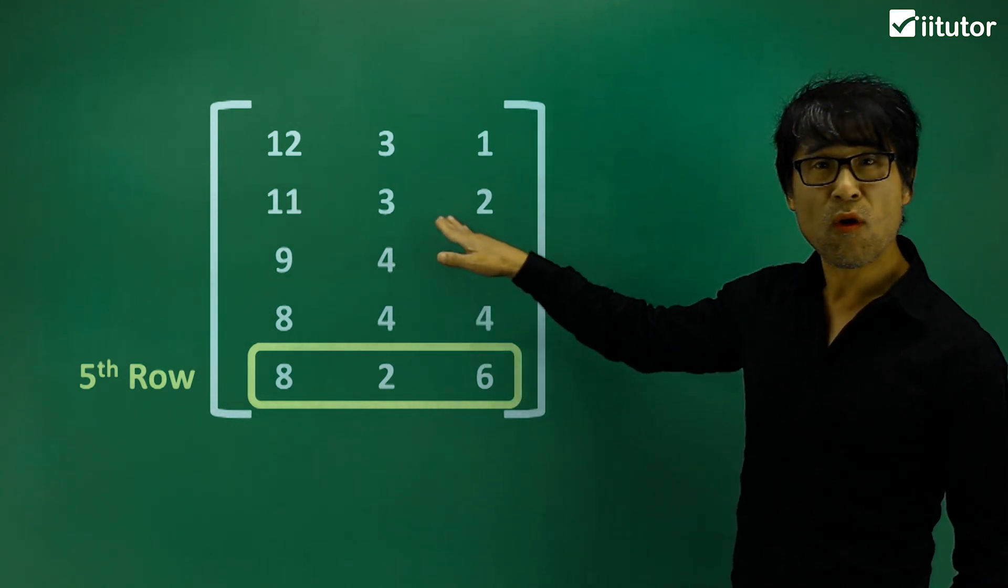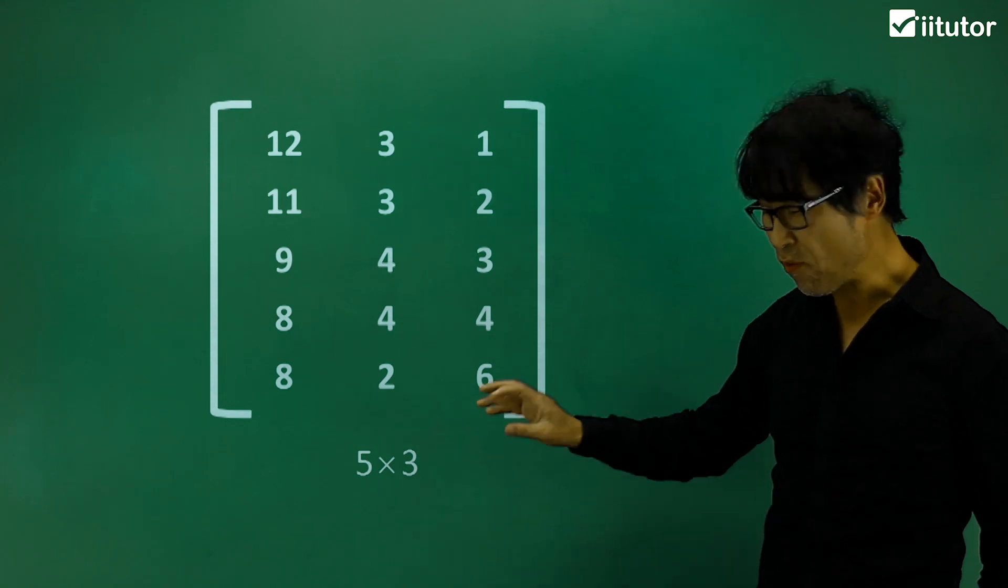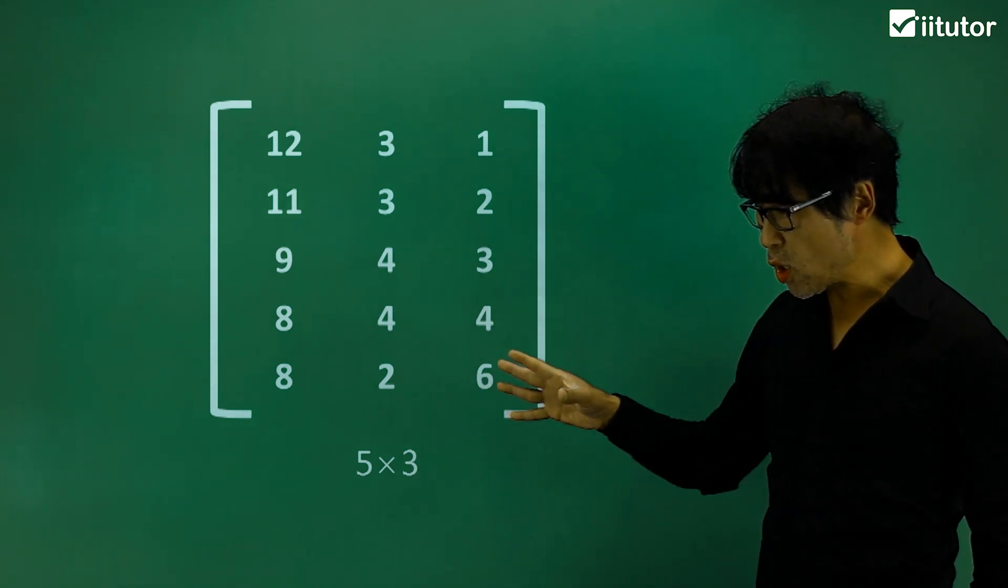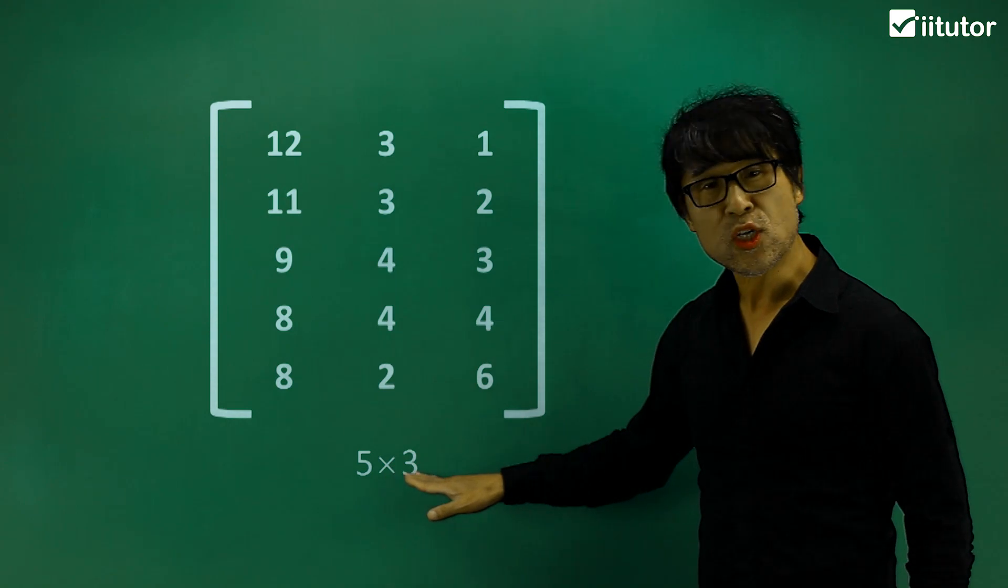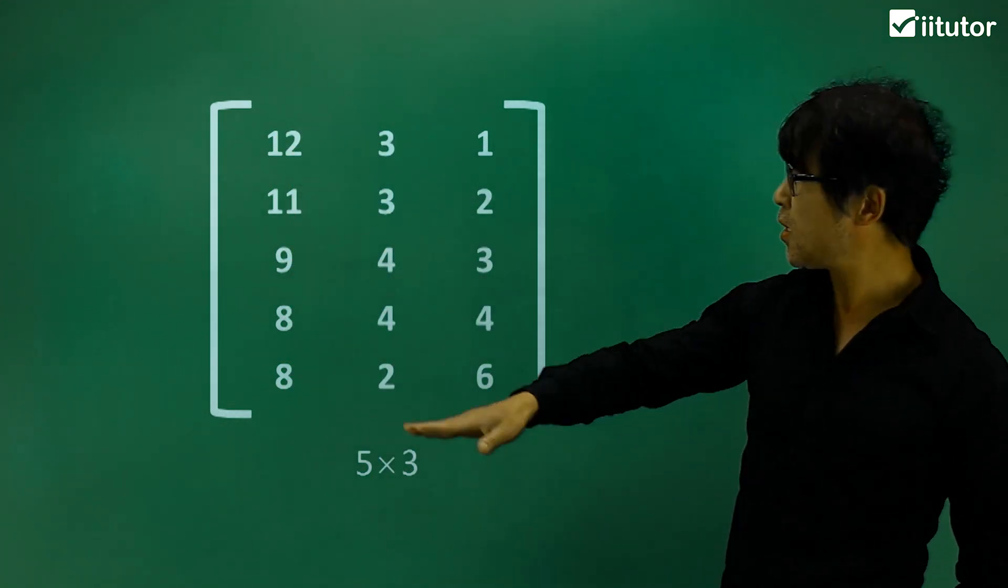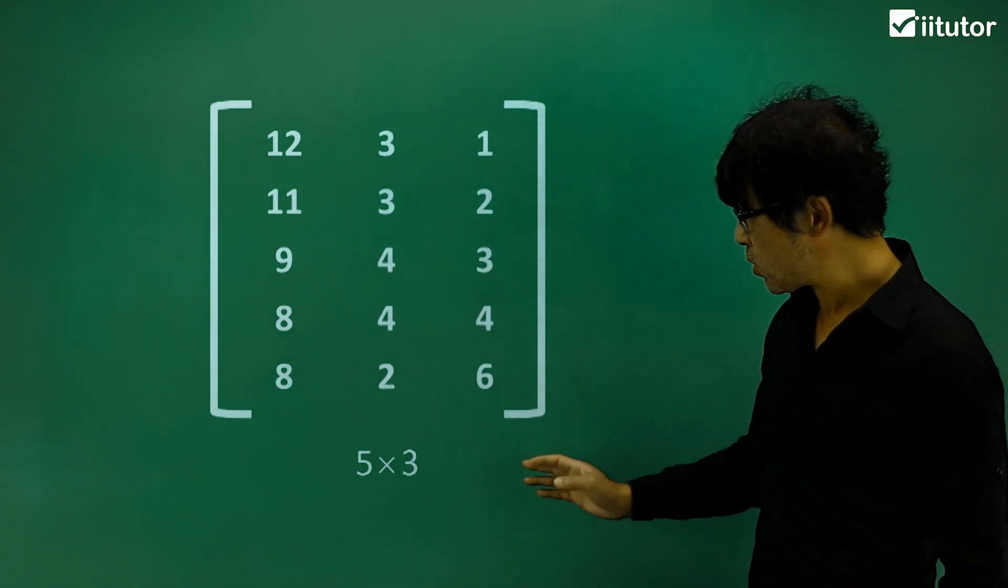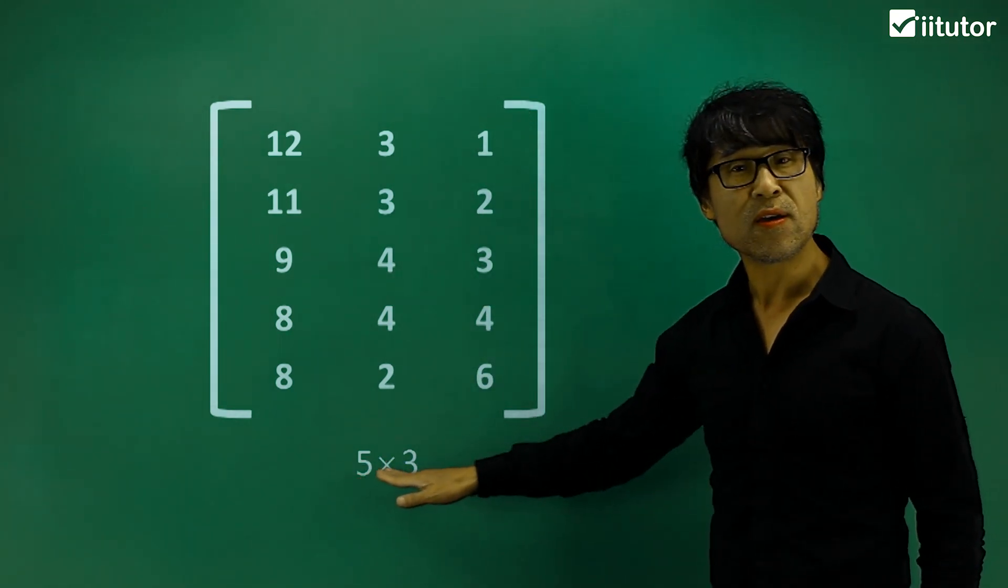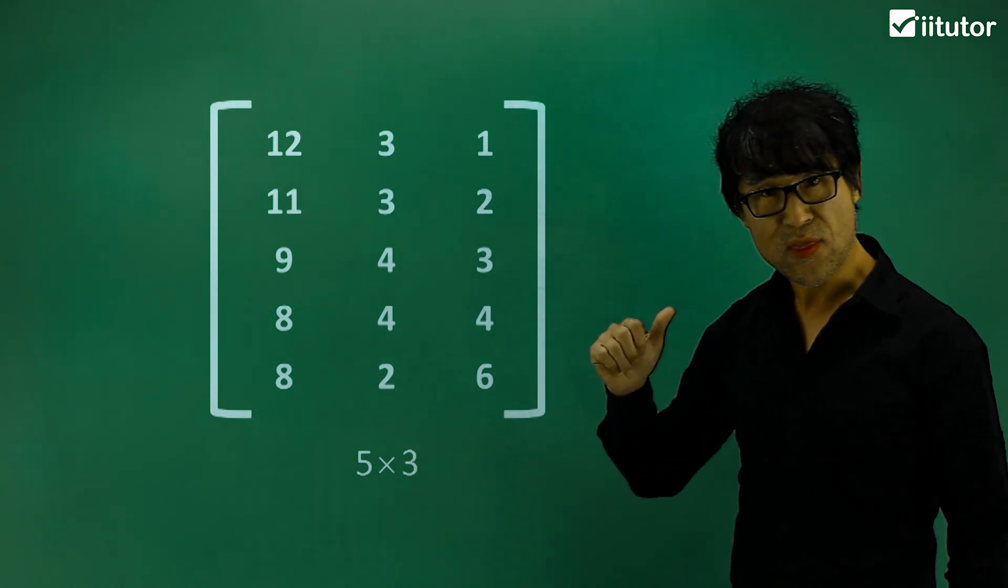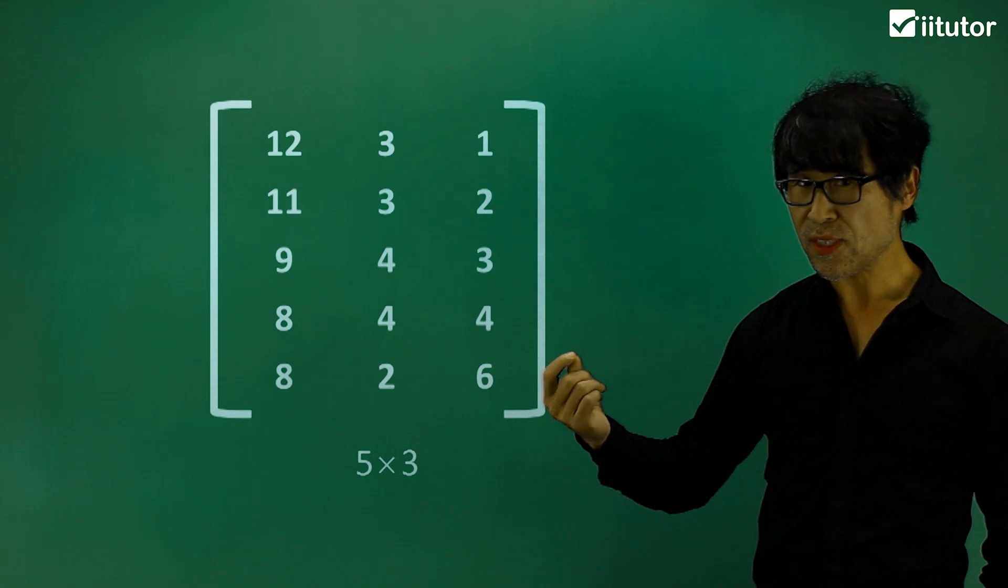The order of this matrix is called five by three. Why five by three? We usually call it row by column. So it has one, two, three, four, five rows, and one, two, three columns. So we call it five by three. That is the order of the matrix, so you get it?